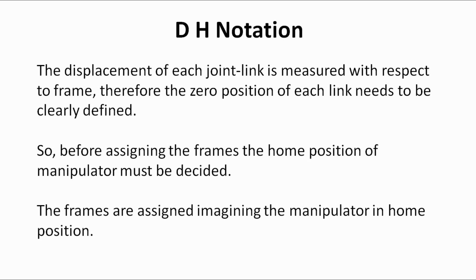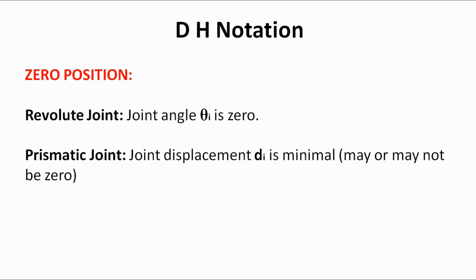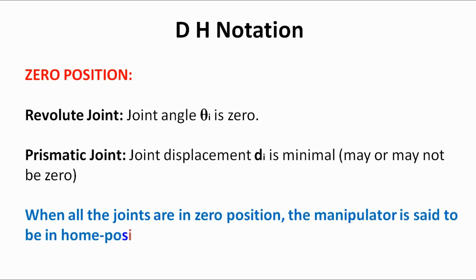The question arises: how to decide the home position of the manipulator? For a revolute joint, the zero position is when the joint angle theta i is 0. For a prismatic joint, the zero position is when the joint displacement di is least or minimal. When all the joints are in the zero position, the manipulator is said to be in the home position.